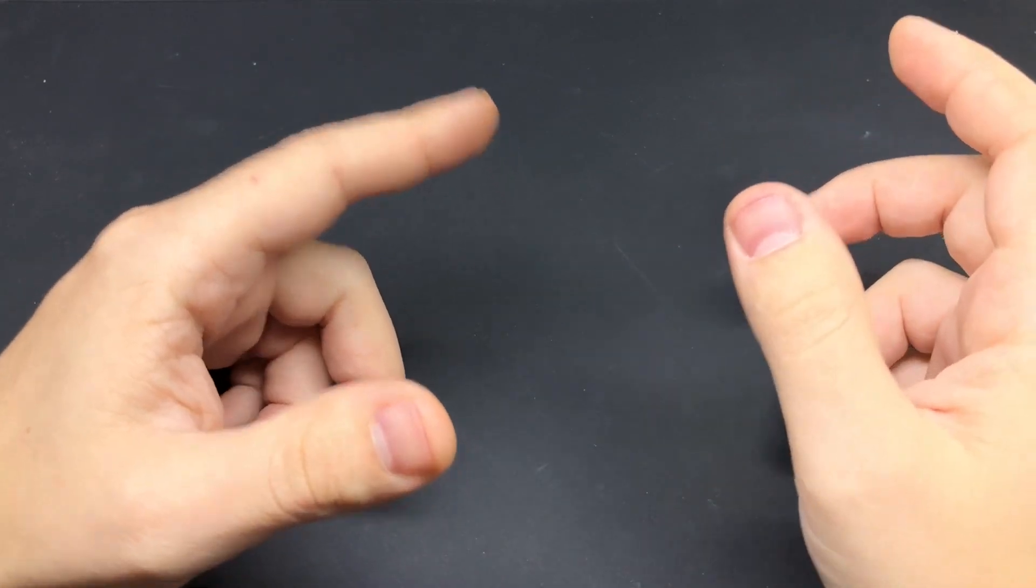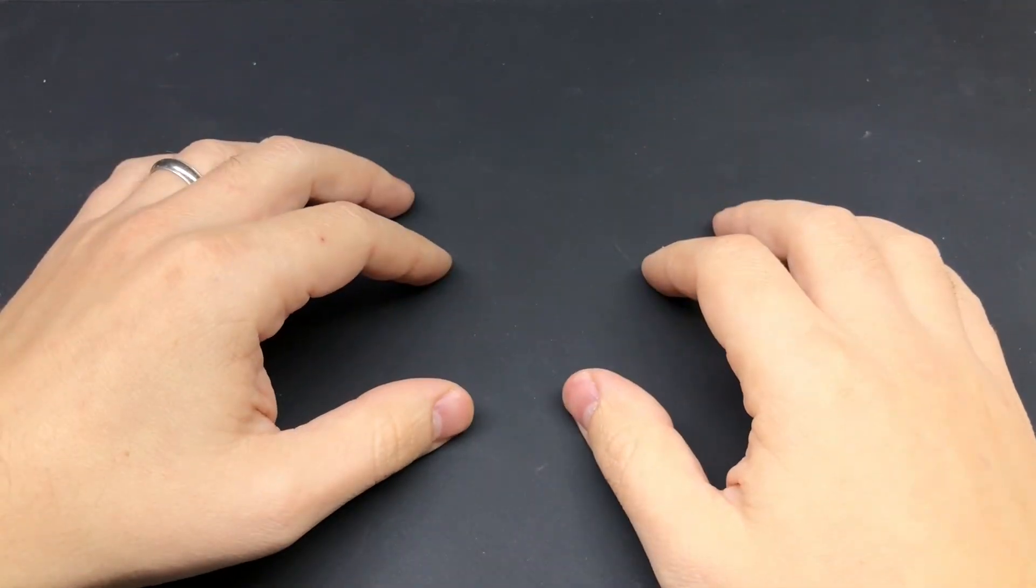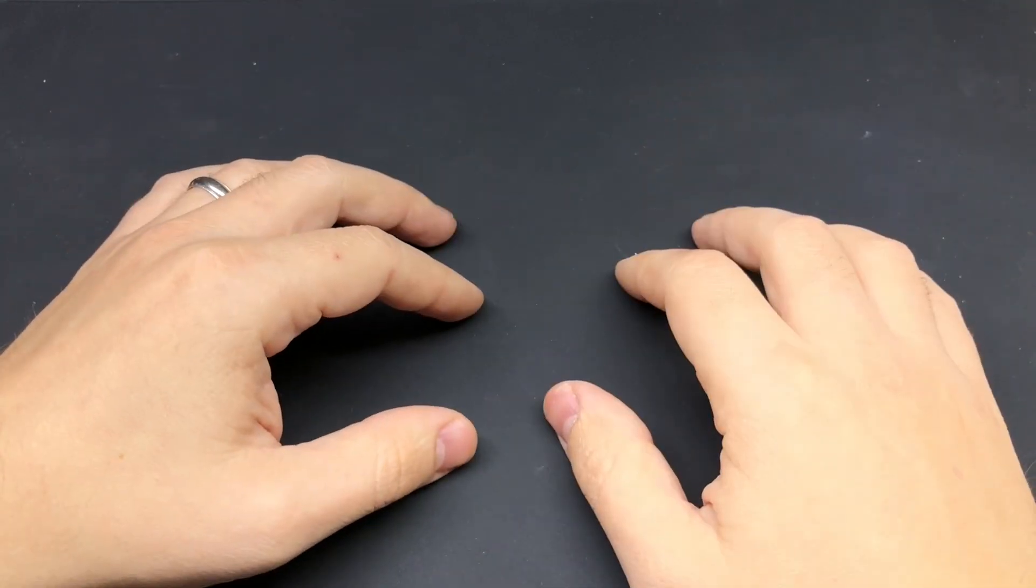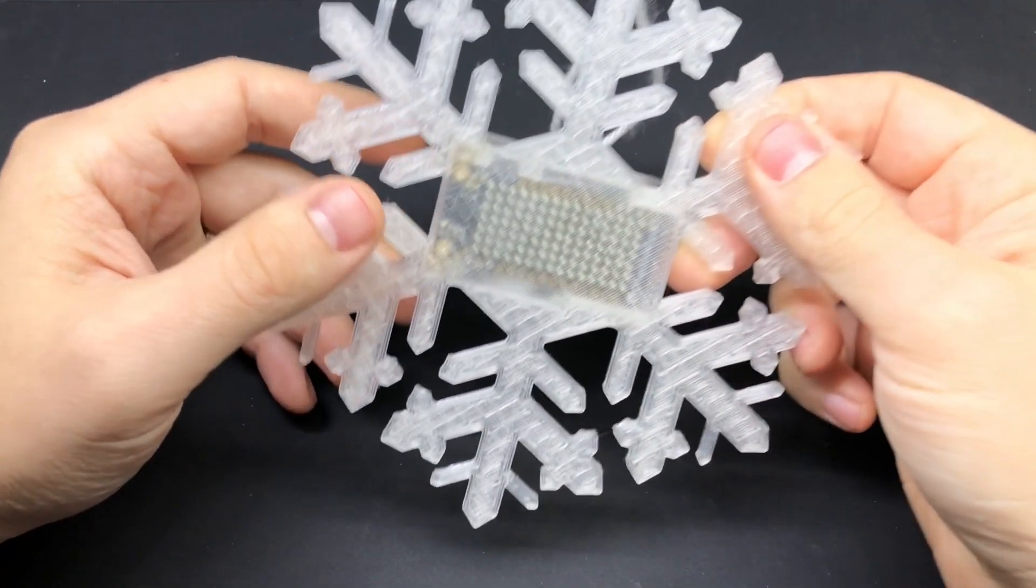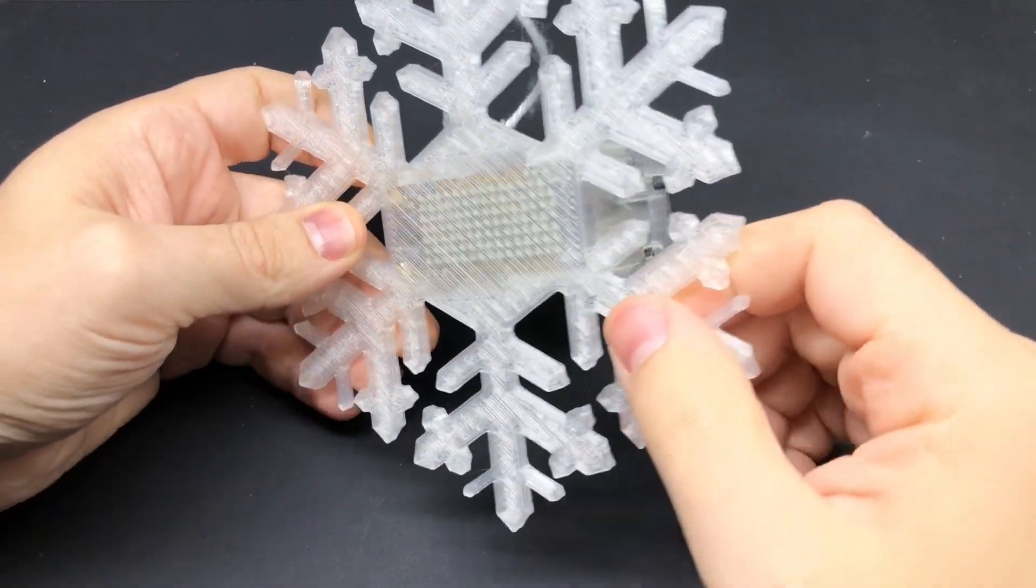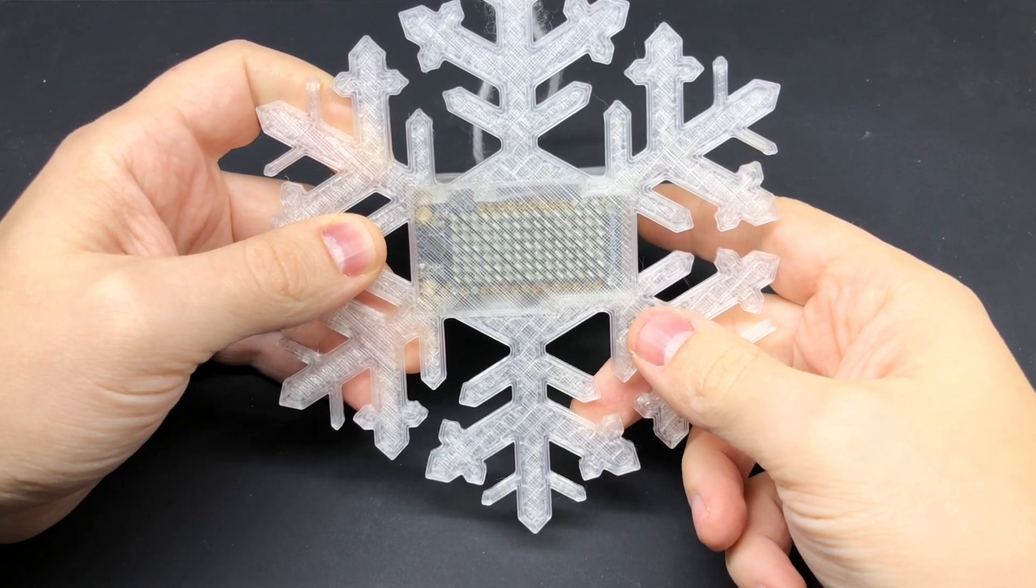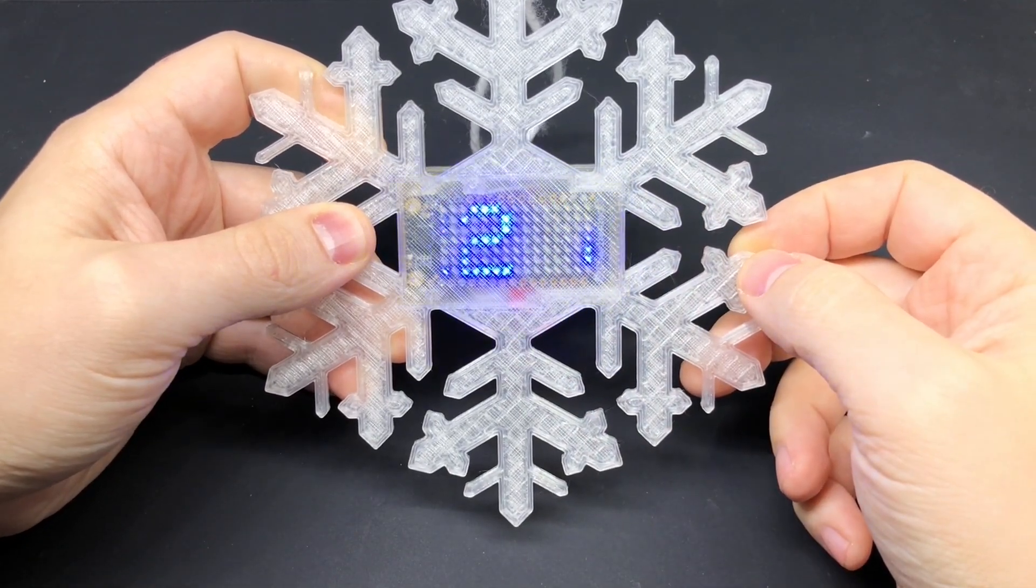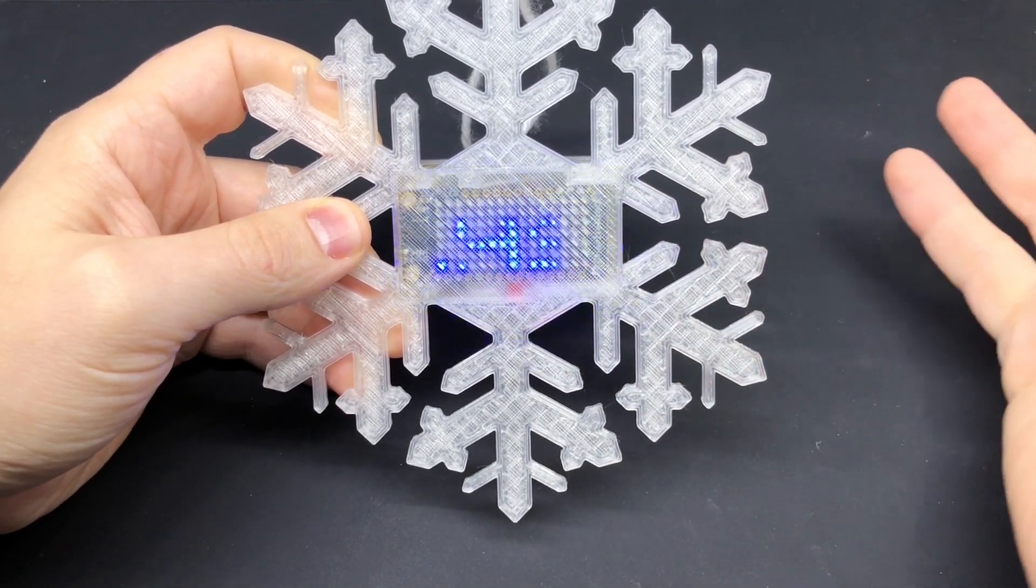I remember when I was a kid, counting down the days till Christmas was always a huge deal in my house. I remember making big chains out of paper, advent calendars, all that kind of thing. So what I've come up with is a 3D printed Arduino powered Christmas ornament that keeps track of time, and when you push a button on the side of it, it'll tell you how many days are left until Christmas.